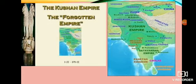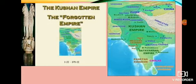Kanishka was a great patron of art. The Mathura School of Art, a new style of art, flourished during his reign. It was Indian both in spirit and style. Images of Buddha and Bodhisattvas were made in Indian style. The headless statue of Kanishka is an example of the Mathura School of Art, where Buddha was depicted with a shaven head. Kanishka sent Buddhist missionaries to Central Asia, China and Southeast Asia, and organized the Fourth Buddhist Council in Kashmir.